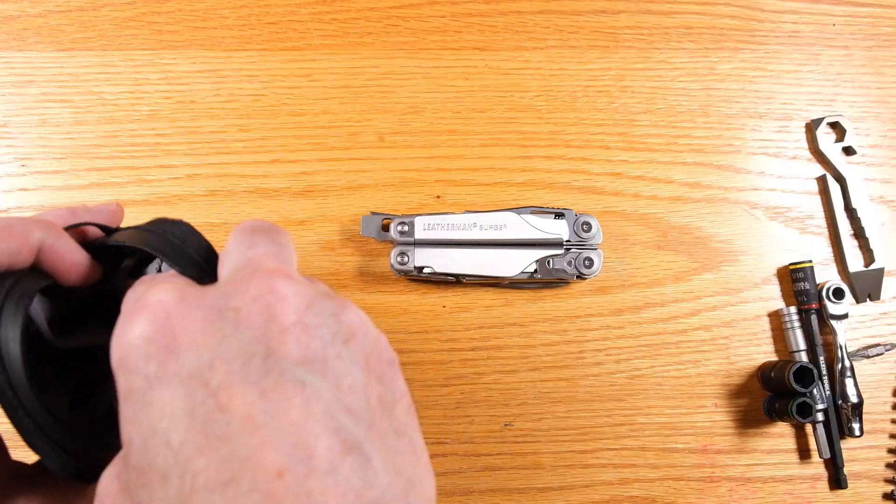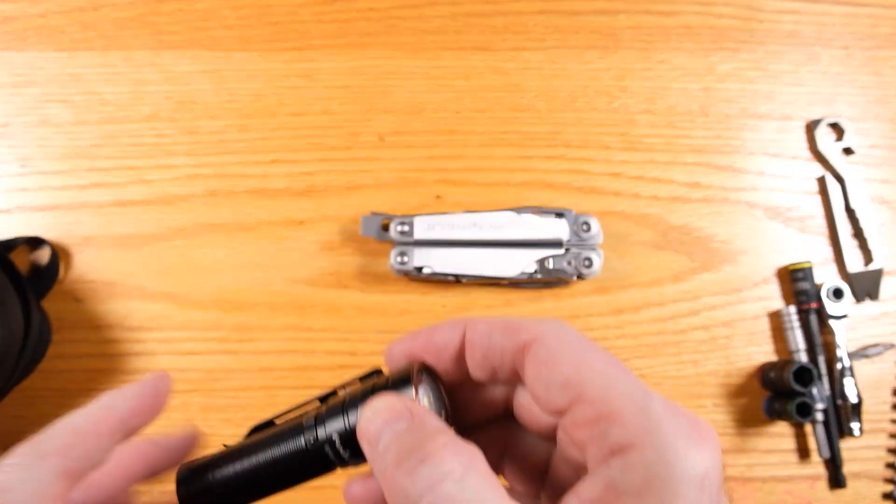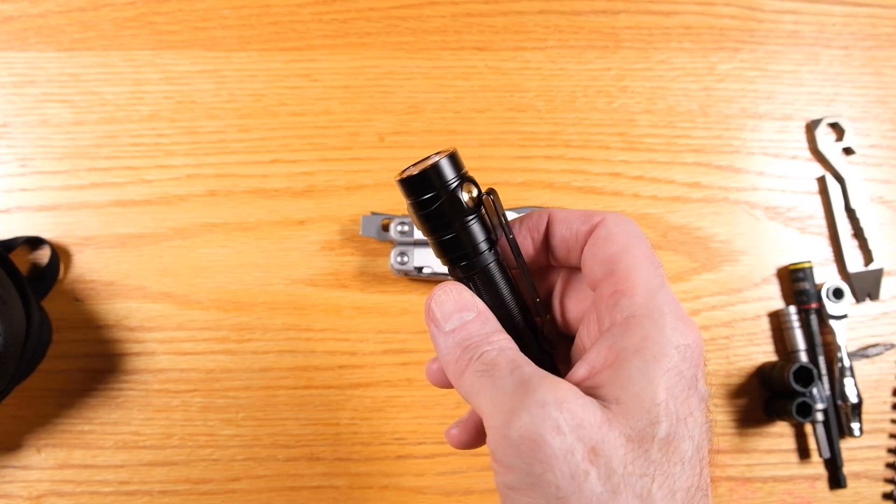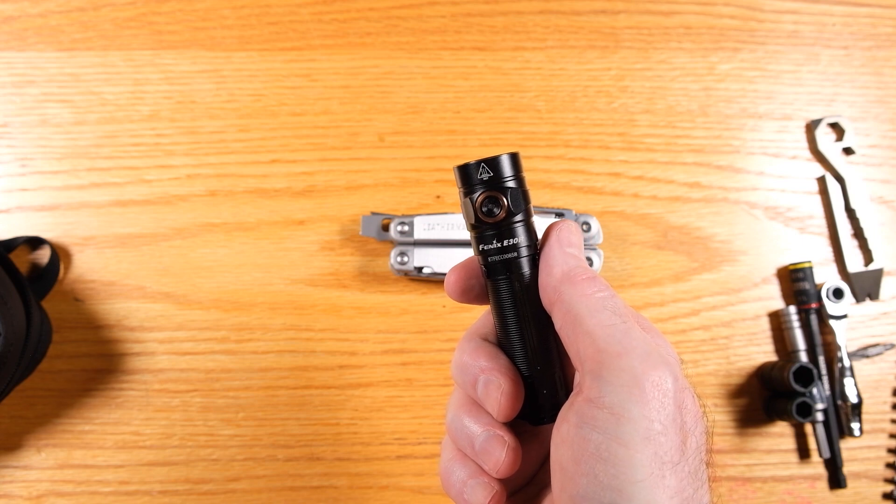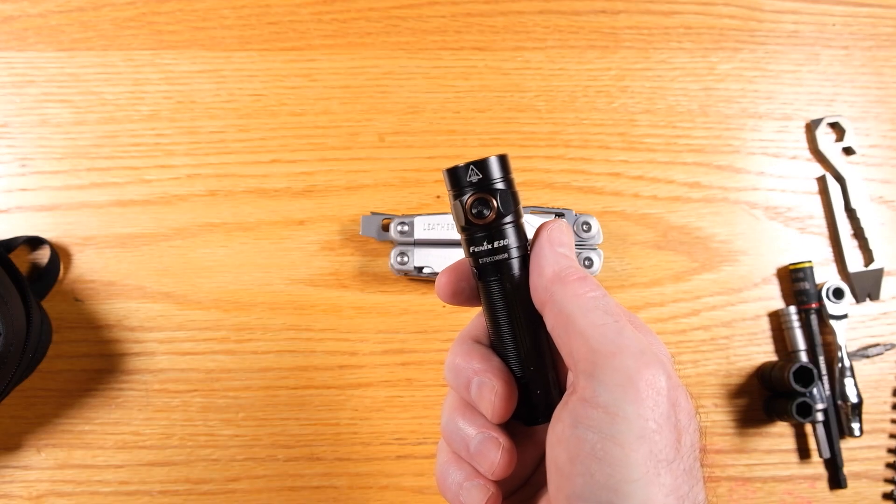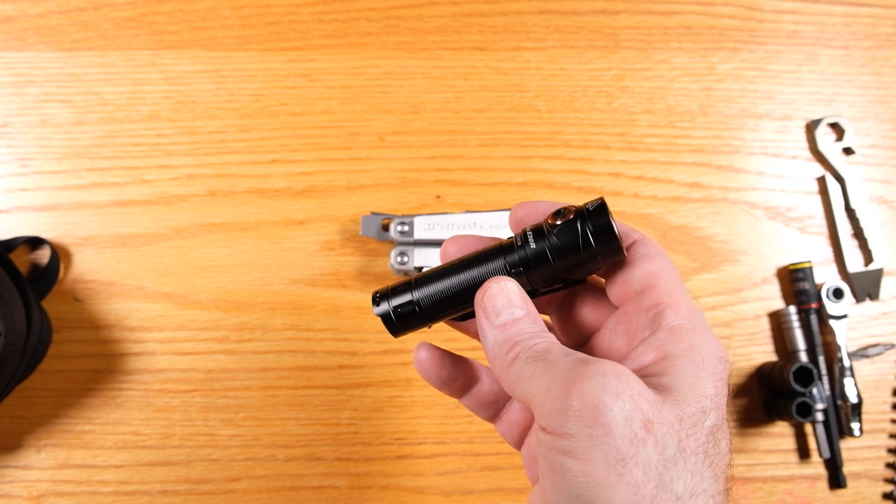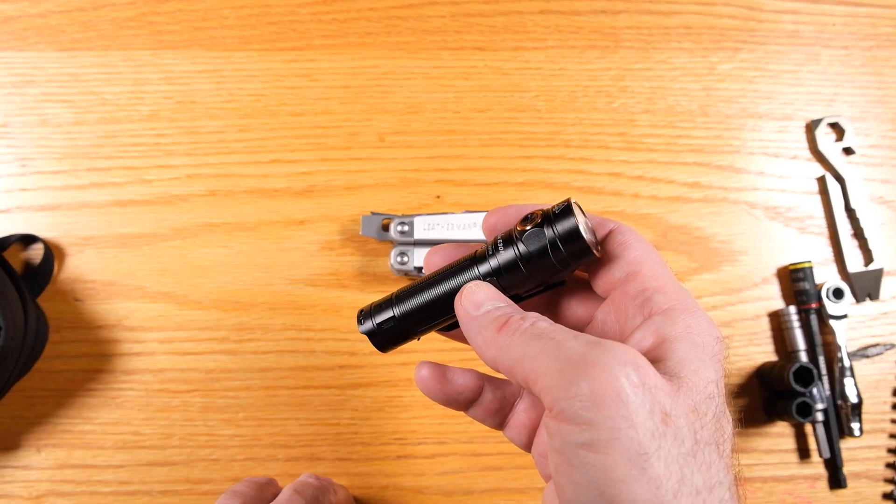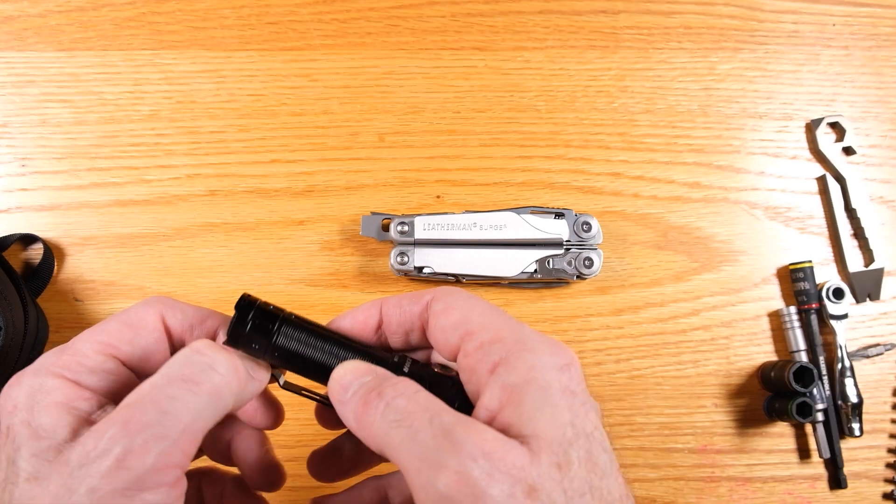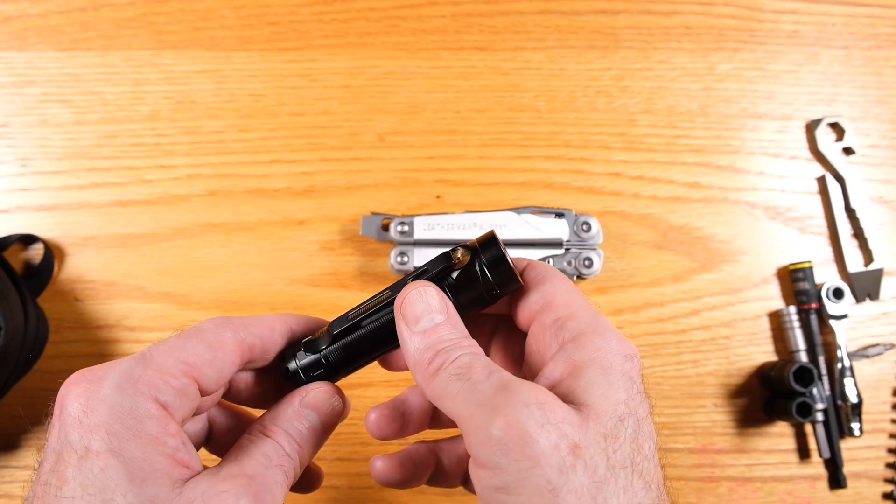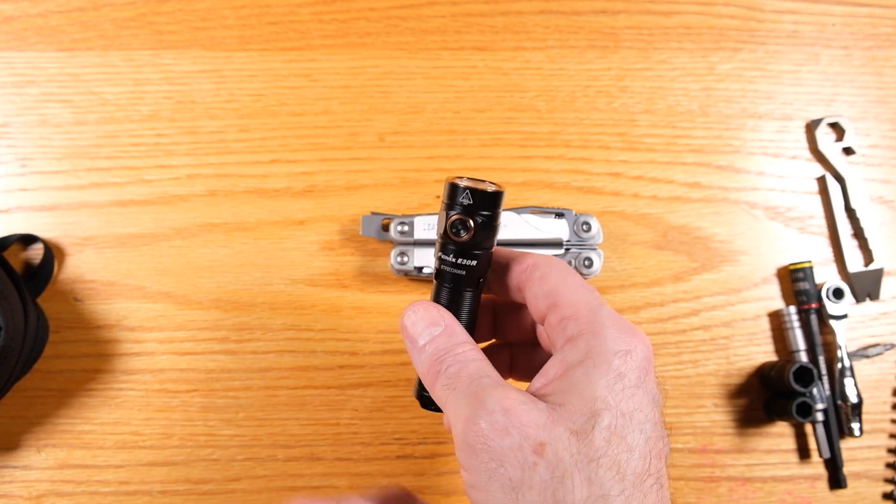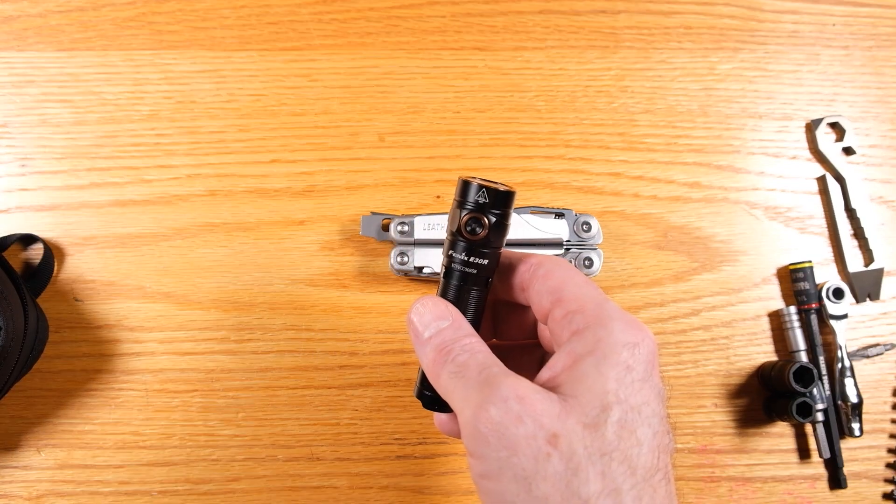And then finally, this is a Fenix flashlight. You're going to work on something and you need light to see. This is an option for that. Now I'm probably going to end up changing this out. This is a good size. It fits in there well, it's very bright. It's got this nice clip that you could put it on your hat and use it like a headlamp if you wanted to.